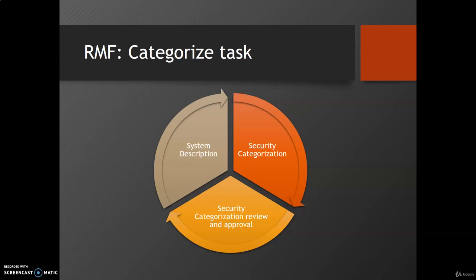For systems that process PII, the senior agency official for privacy reviews and approves the security categorization result and decision prior to the authorizing official's review. Security categorization results and decisions are reviewed by the authorized official or a designated representative to ensure that the security category selected for the information system is consistent with the mission and business function of the organization. The authorizing officer also reviews the categorization results from an organization-wide perspective, including how the decisions align with categorization decisions for all other organization systems.